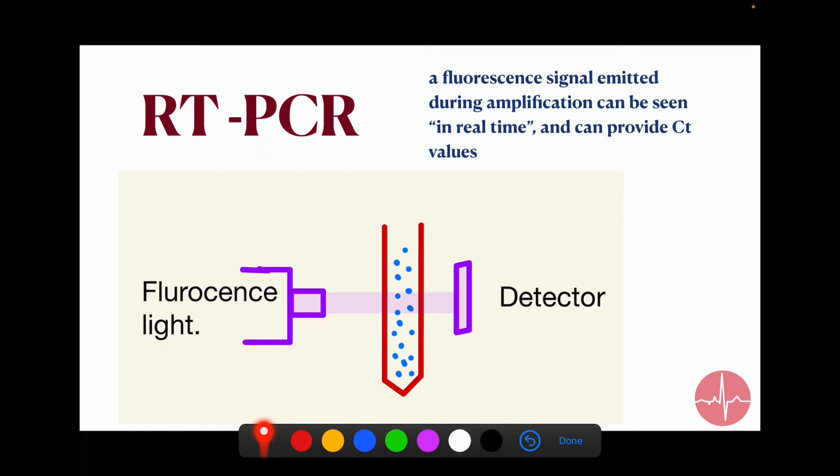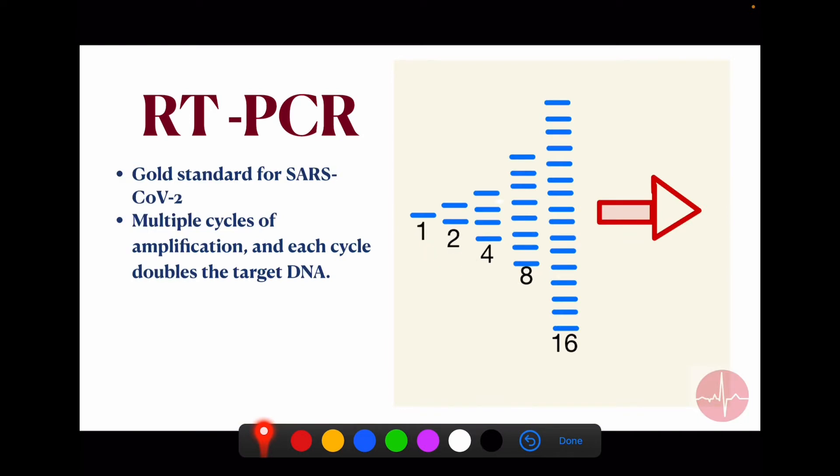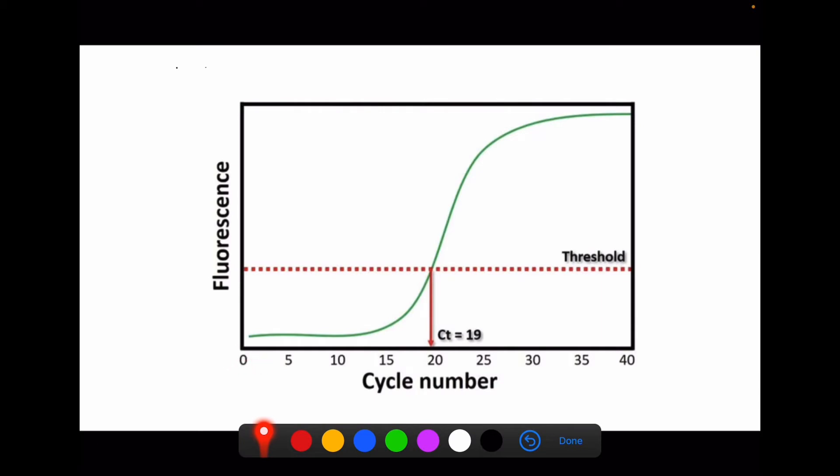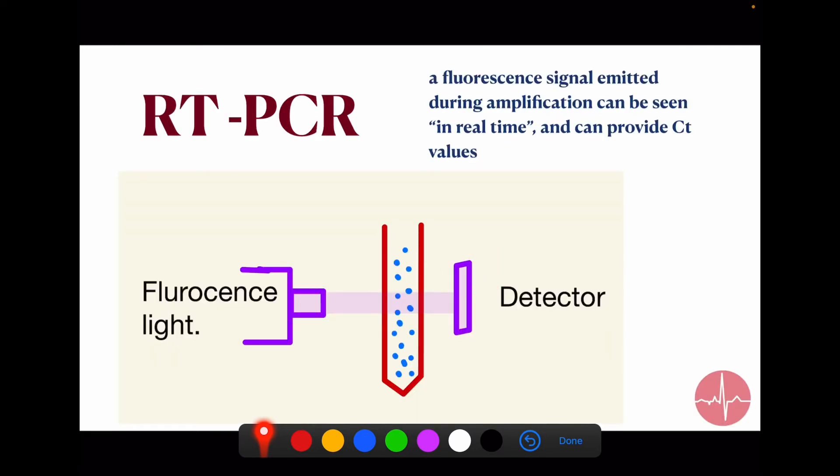During the multiplication process we can see that after how many cycles it detects the background fluorescent signal. Here we can see that after 19 cycles we have enough fluorescent light to detect via the detector. So in real-time PCR, the fluorescence will also provide the CT value.